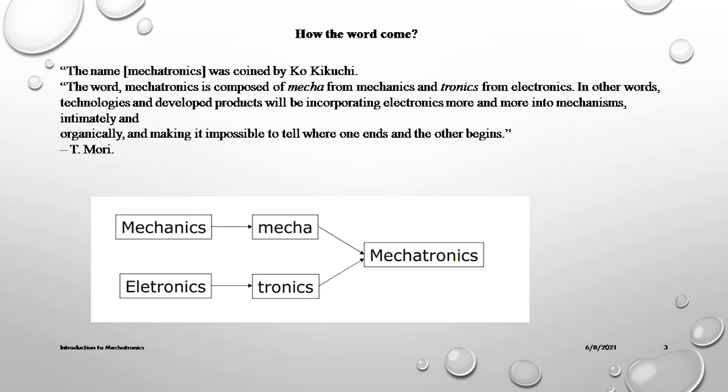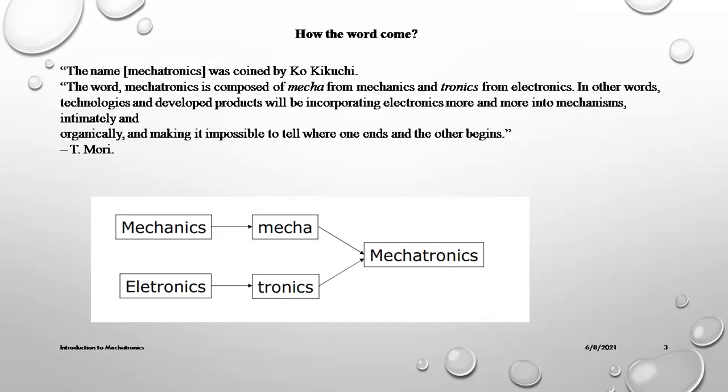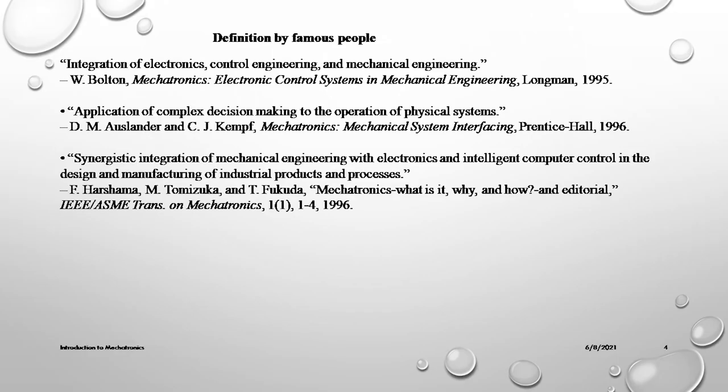That Japanese engineer is Koki Kuchu, who gave some early examples of mechatronics. Here is another famous definition by T. Mori, which we can see on the slide. These are some further definitions by famous people.